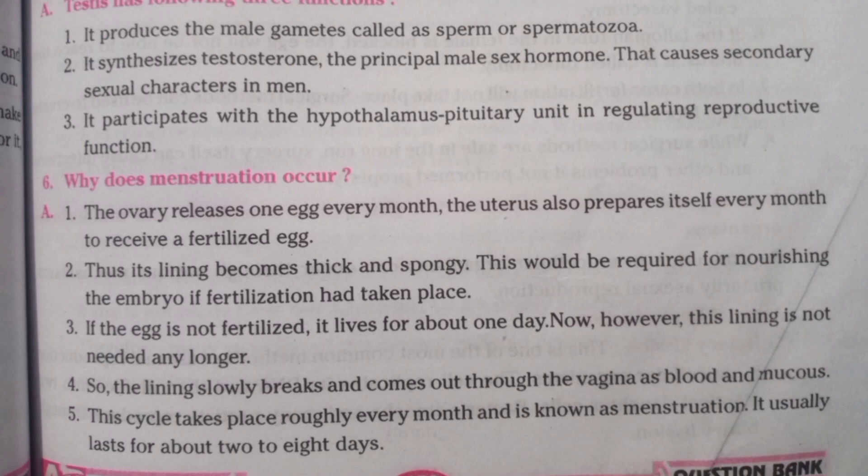Why does menstruation occur? The ovary releases one egg every month. The uterus also prepares itself every month to receive a fertilized egg. Thus its lining becomes thick and spongy. This would be required for nourishing the embryo if fertilization had taken place.